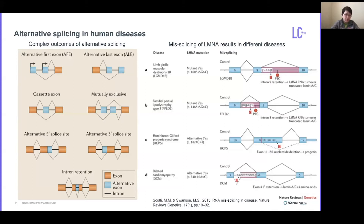As you all know, alternative splicing is the process that generates different RNA isoforms to increase its diversity and complexity. It can have very complex patterns such as inclusion of different first and last exons. Introns can be selectively retained and exons can be mutually exclusive. Sometimes splice sites at either the 5' and 3' ends can also change.